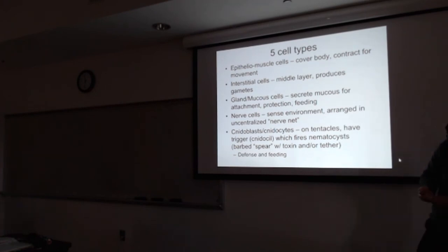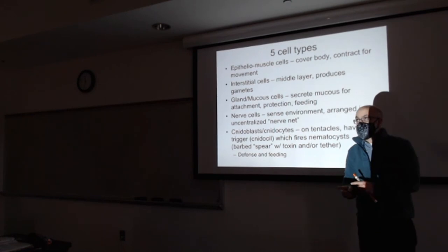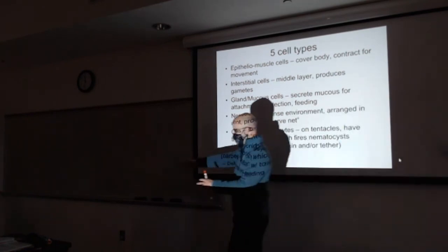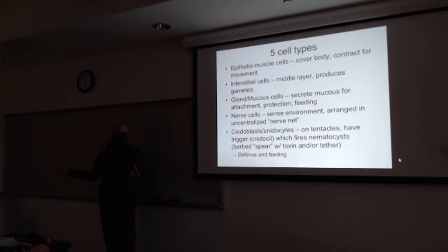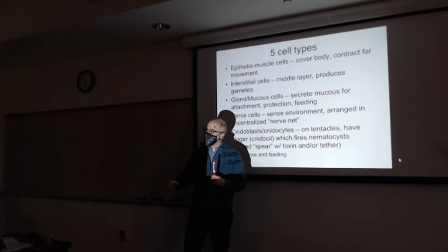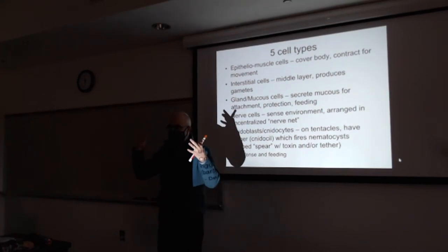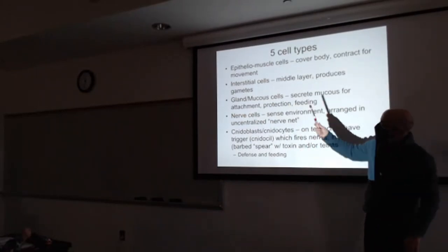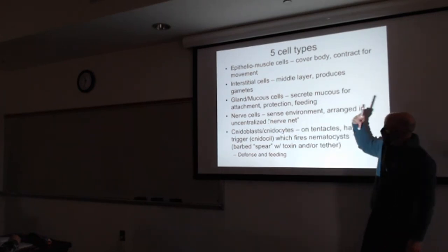Sponges had basically three main cell types. Humans probably have hundreds of cell types, maybe thousands. Jellyfish are somewhere in between, five main cell types. These guys cover and contract. These guys produce the gametes. These guys secrete mucus. Nerve cells. These are all specialized for some specific job. Think about all the things that the animal has to do. Cells become really specialized for doing those really efficiently, but they have to work together. Each of the sponge cells is like a jack of all trades. That's why you can put them in a blender and they'll come back together.